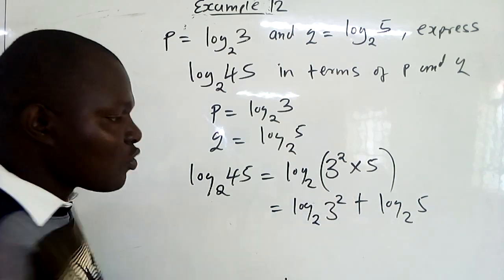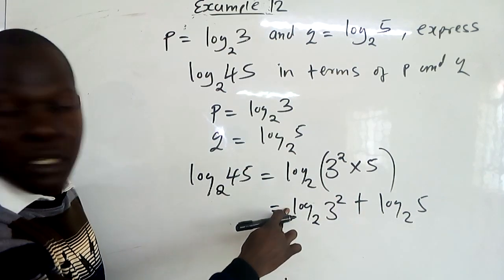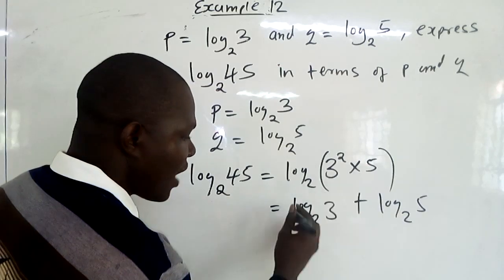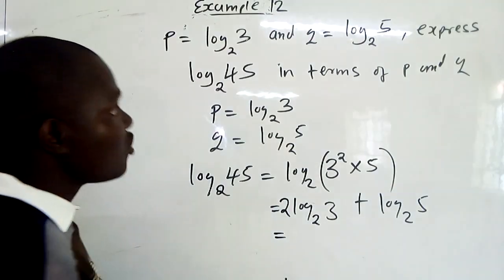Then you get rid of the power. Power 2 becomes the coefficient of the log. So this power 2 becomes the coefficient. Then you start substituting.